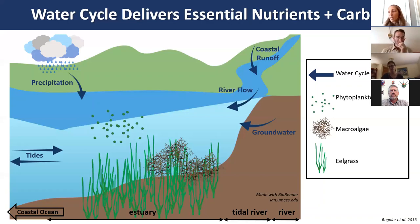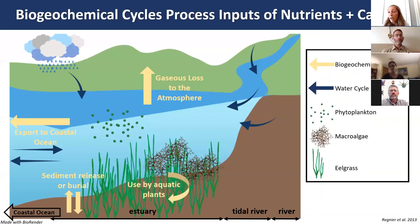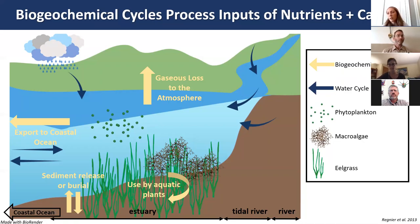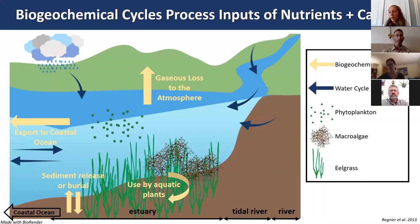Once these nutrients and carbon reach an estuarine ecosystem, it's the responsibility of biogeochemical cycles to process those inputs. Processing pathways include gaseous loss to the atmosphere via denitrification—where nitrate is converted to dinitrogen gas under anaerobic conditions—or CO2 outgassing. Nutrients can also be taken up by aquatic plants via biotic assimilation, retained or released by sediments, or exported out to the coastal ocean.